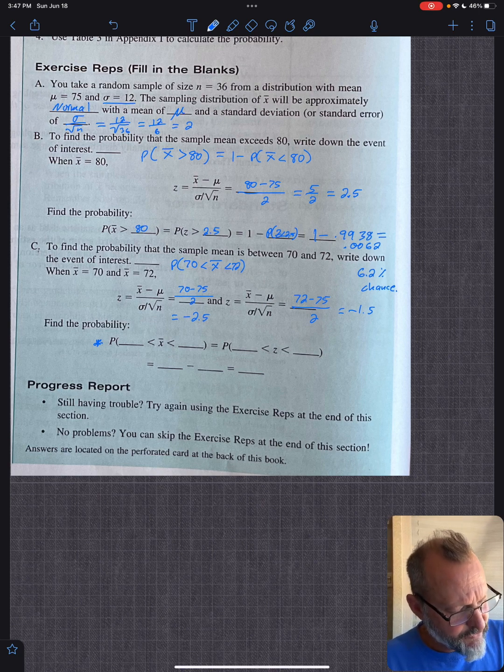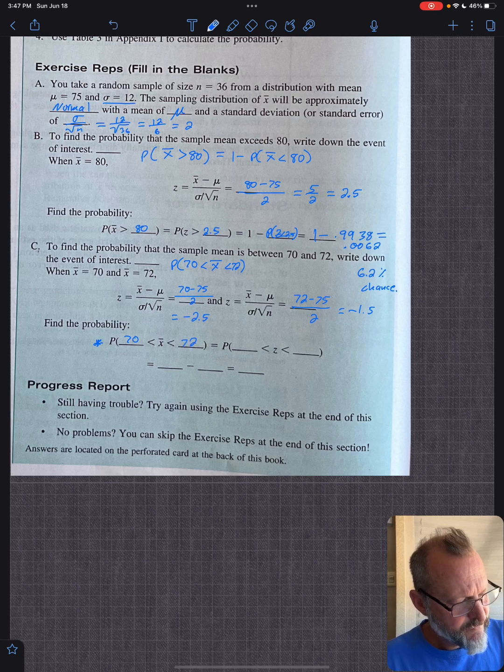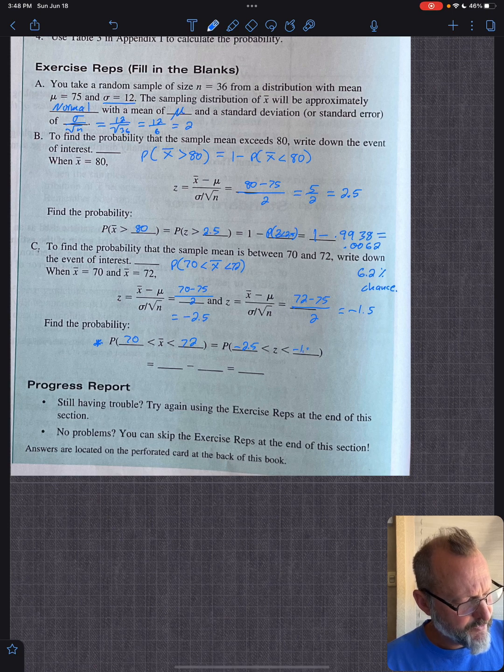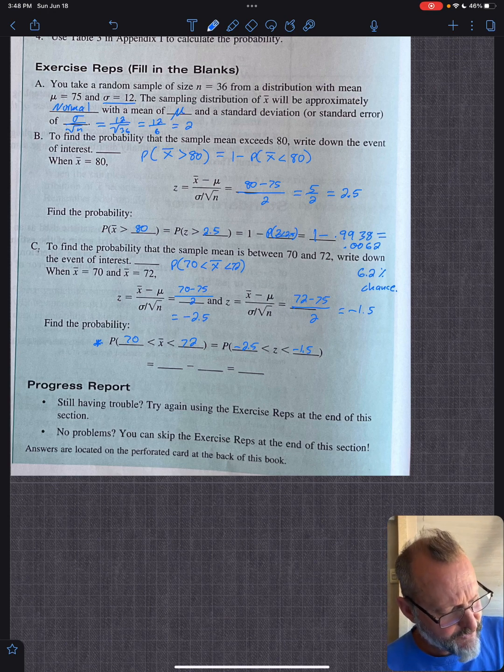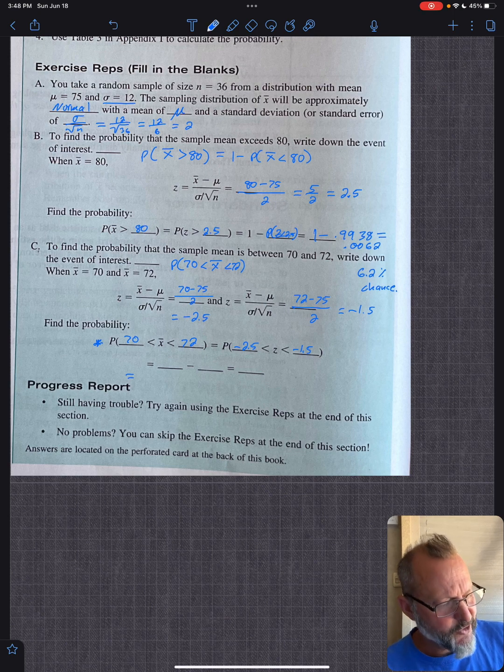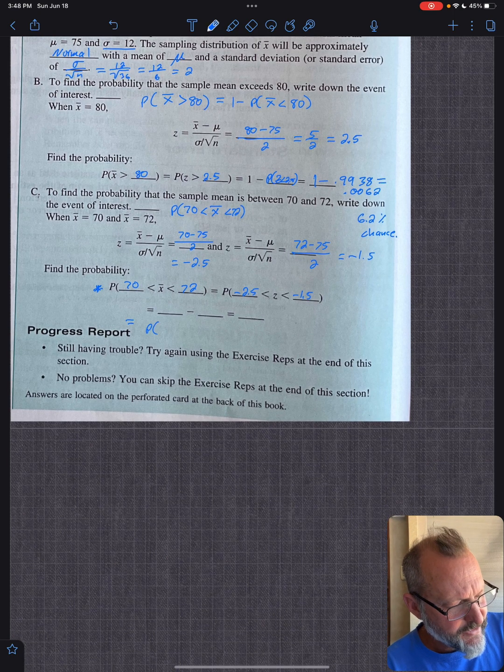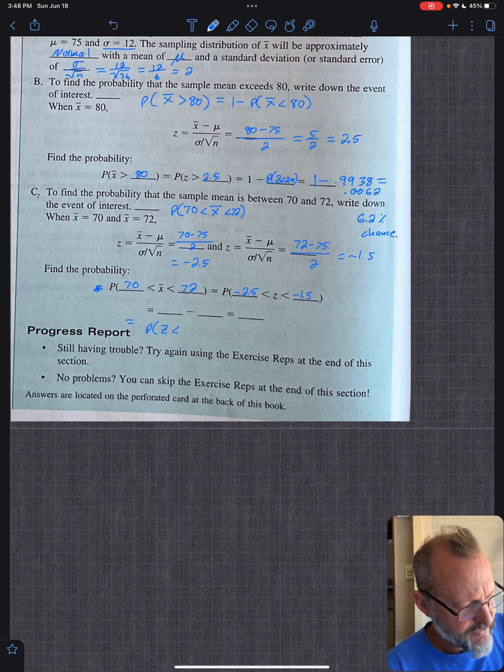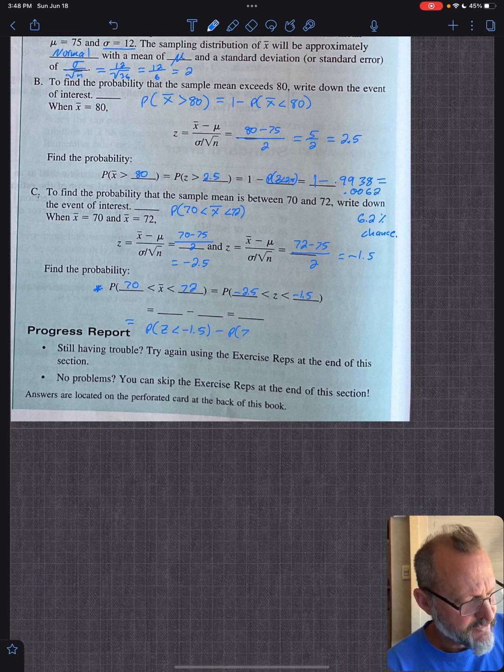So this is the same as I wrote above. Your z-score is between negative 2.5 and negative 1.5. So now you've got to do the 1 minus thing. It's the probability that it's below negative 1.5 minus the probability that it's below negative 2.5. This is because of the way they accumulate the tables. So you're doing the probability that z is less than negative 1.5 minus the probability that z is less than negative 2.5.